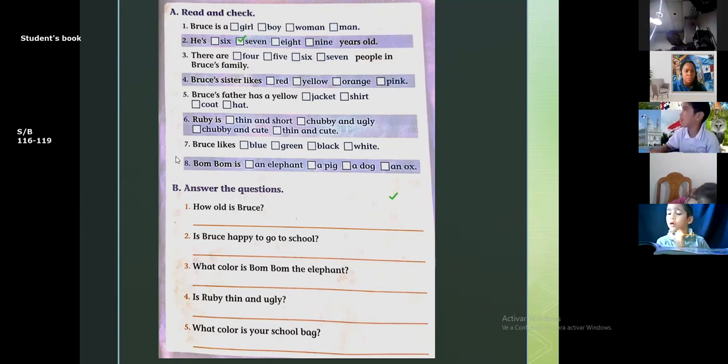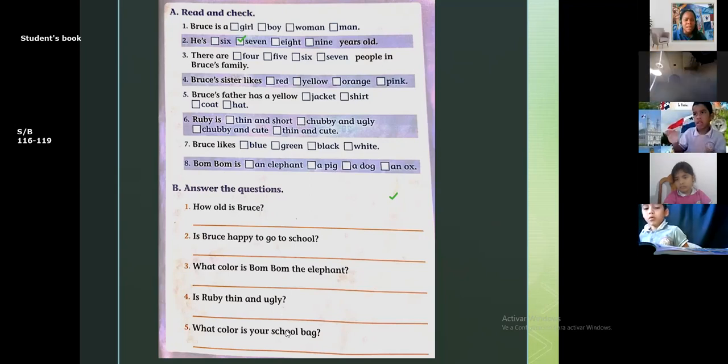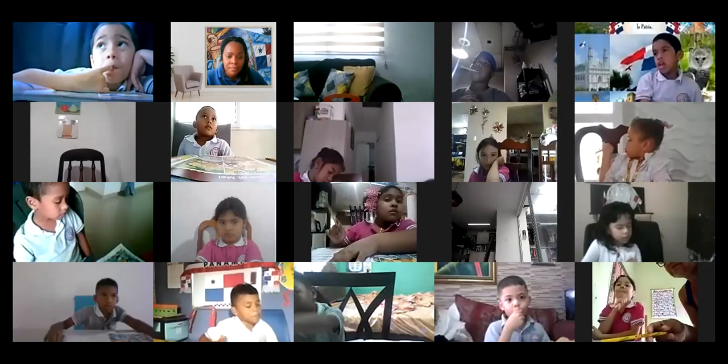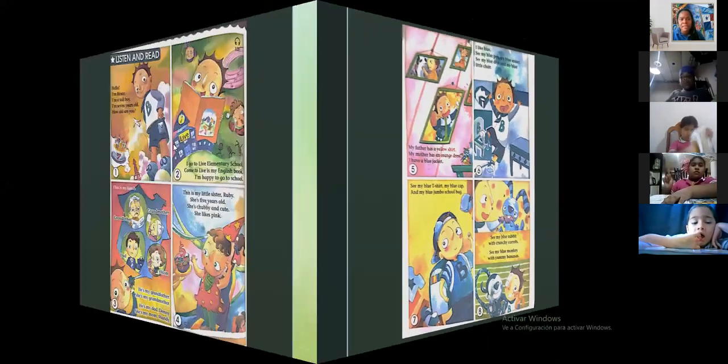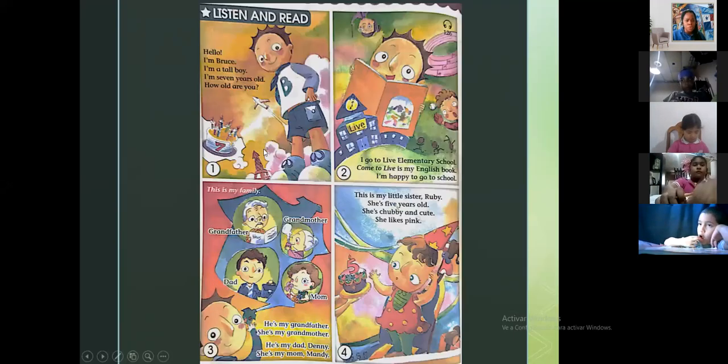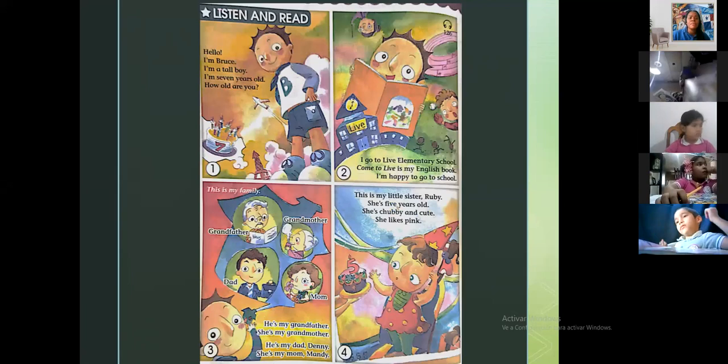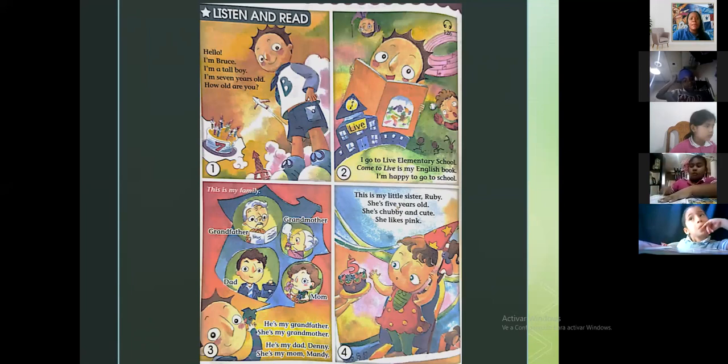Let's continue Harold, tell me. Maestra en cada página, no lo encuentro. Por la de la 90, más atrás. Tienes que ir más atrás de la 90. Harold tienes que buscar más atrás. Okay guys so let's continue, remember students book página 116. Hablamos de que Bruce, hello I'm Bruce I'm a tall boy, I'm seven years old, how old are you? Sabemos que Bruce tiene siete años, que es un chico alto. También sabemos cuántos años tienes tú, que va a una escuela elemental, que tiene su libro se llama Come to Life, que él es feliz yendo a la escuela.